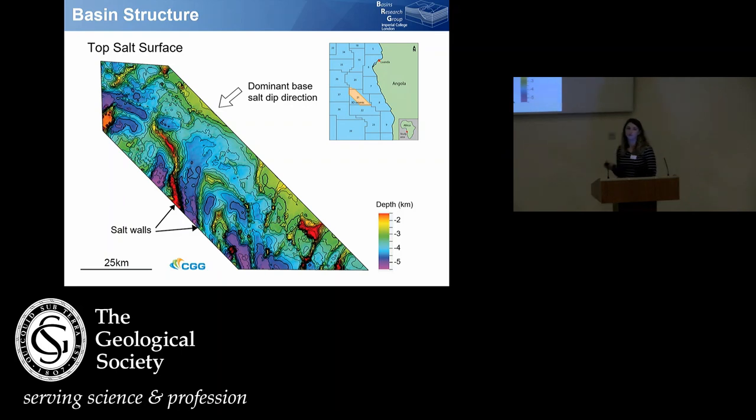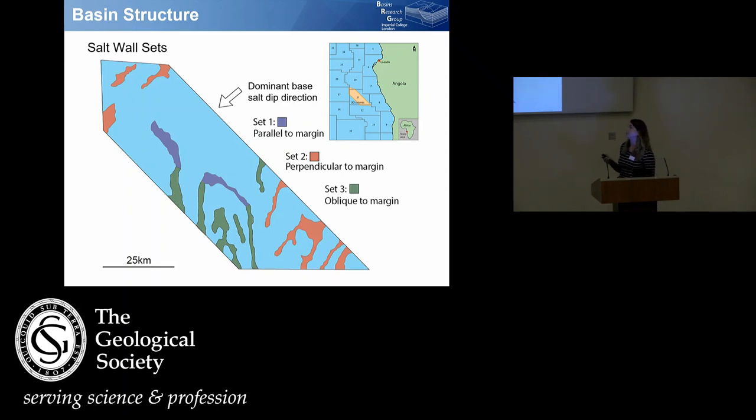Now we're looking at a plan view of our top salt surface. We're looking down now, and the highs of this top salt surface are where our salt walls are distributed throughout my data set. If I just make it a little bit clearer to see, based purely on the orientation alone, we can divide the salt walls up into three distinct sets. We have set one, which is parallel to the margin. That's roughly what we'd be expecting if we were looking at a gravity gliding system that I showed before. We have set two, which is perpendicular to the margin, which is not predicted by either of our end-member kinematic models that we saw before, and set three, which is this north-south set oblique to the margin. We seem to have three distinct trends in our salt walls, and I will show in a minute how these orientations are also associated with distinct structural evolutions.